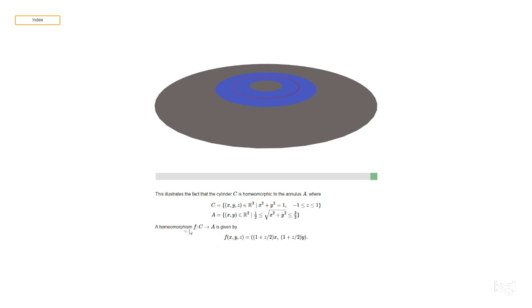If you want an actual formula, we can do it like this. We've got a function f from C to A sending f of xyz to (1 plus z over 2)x, (1 plus z over 2)y.